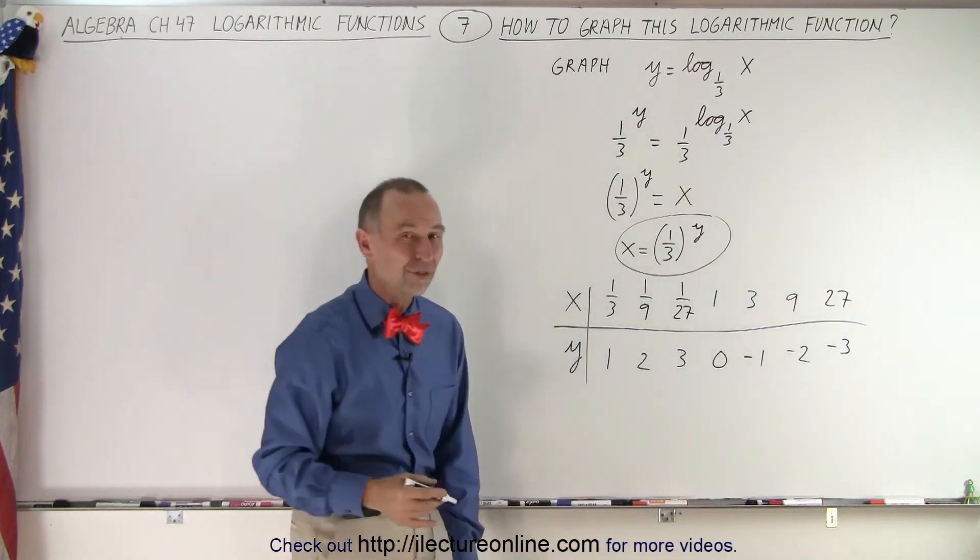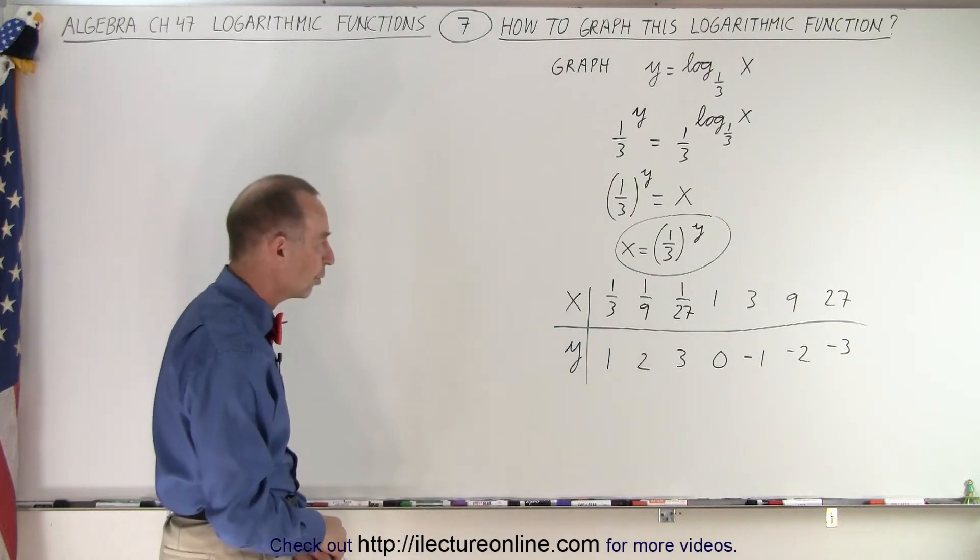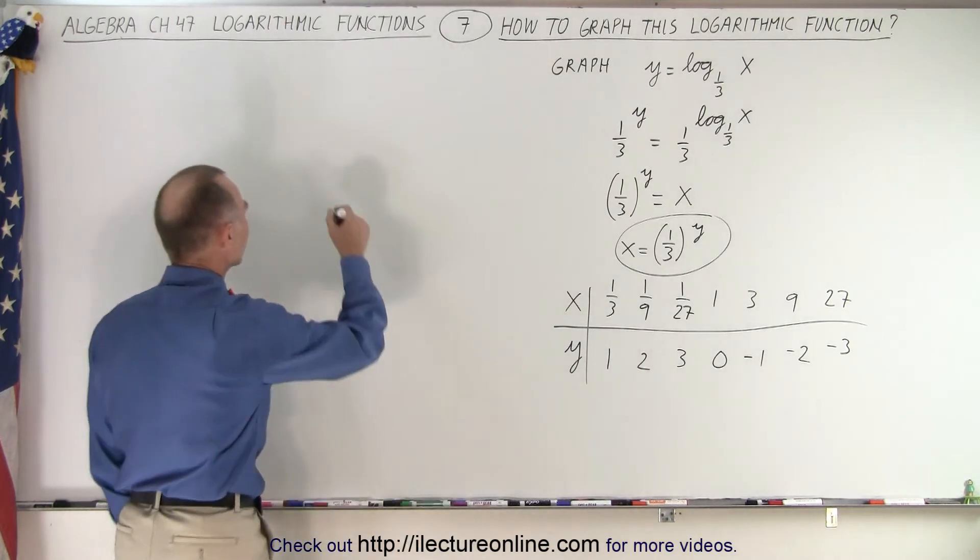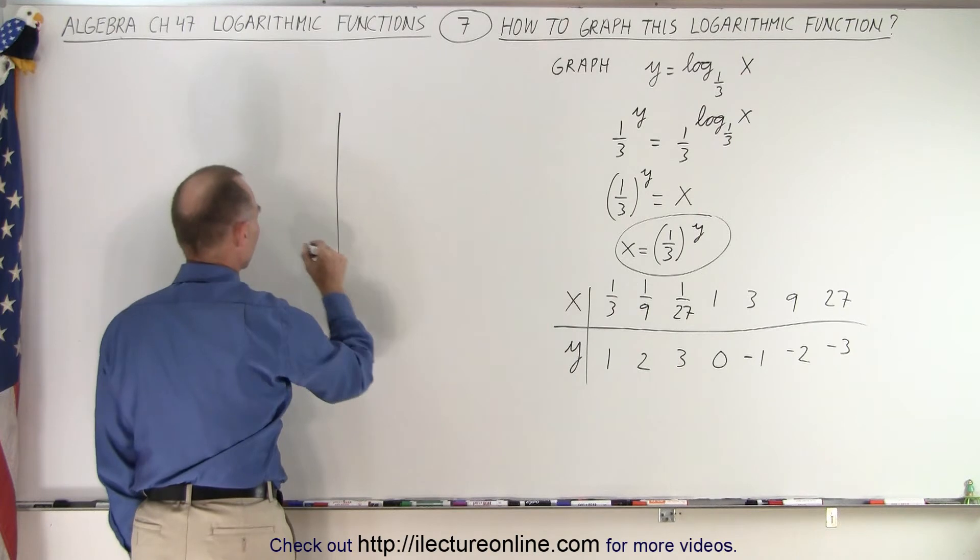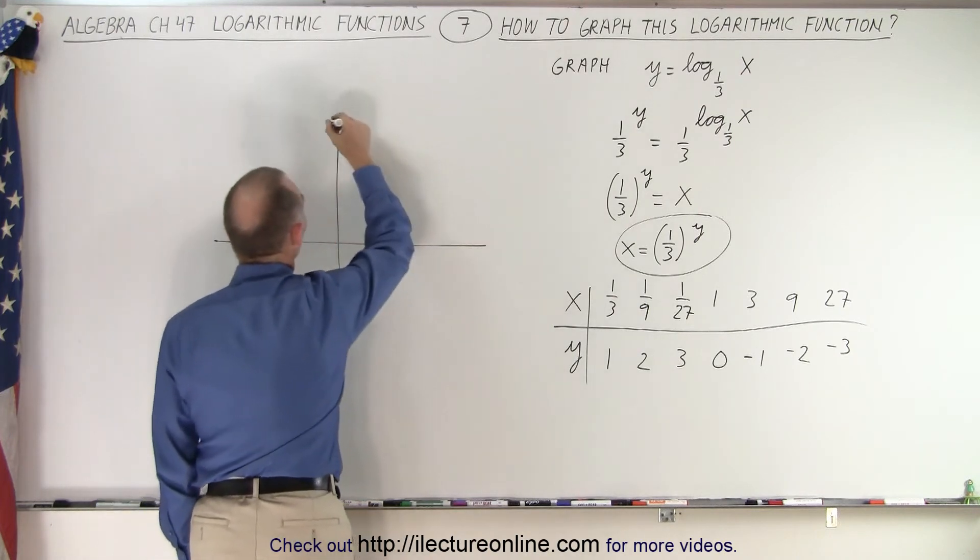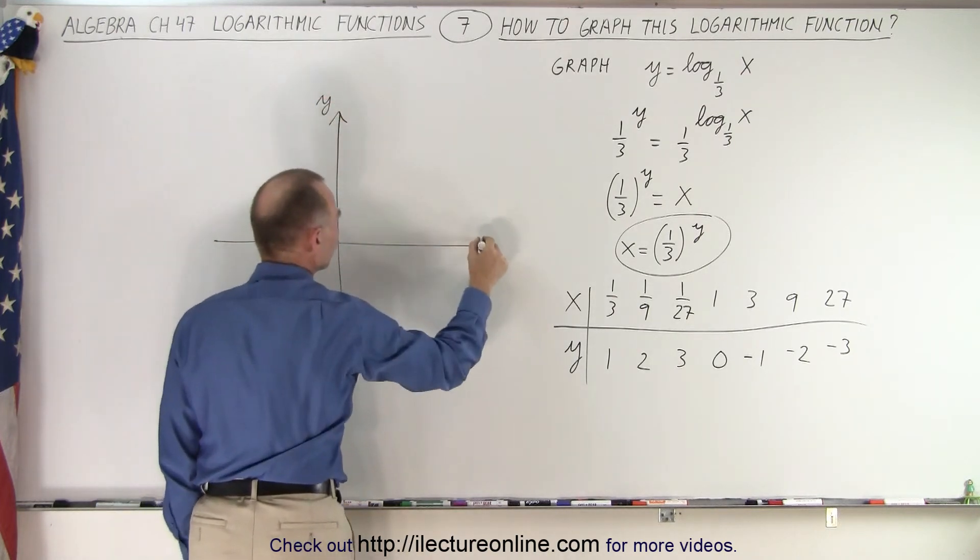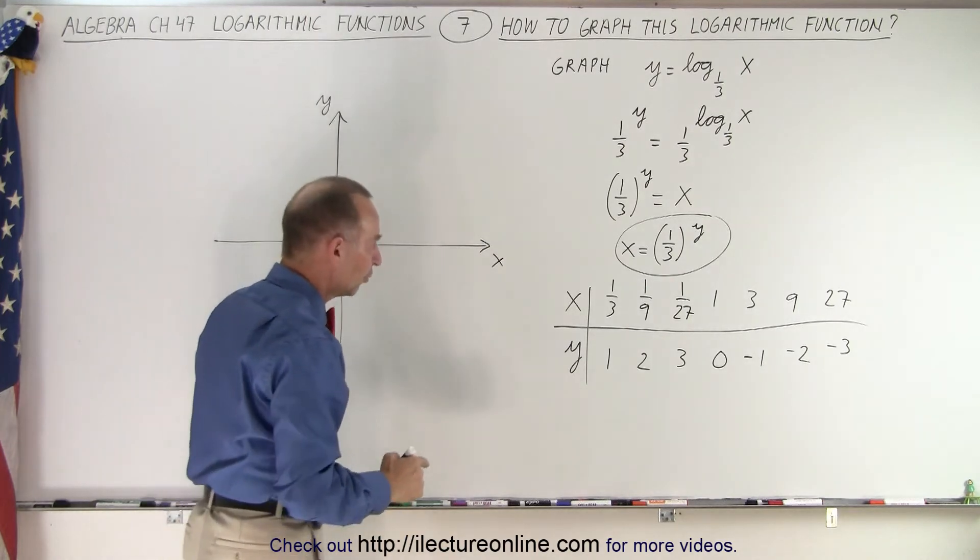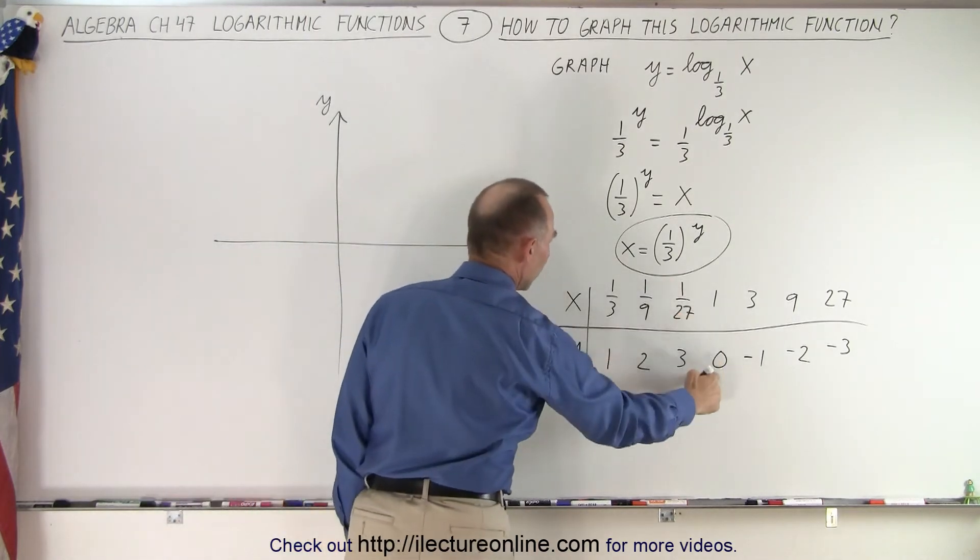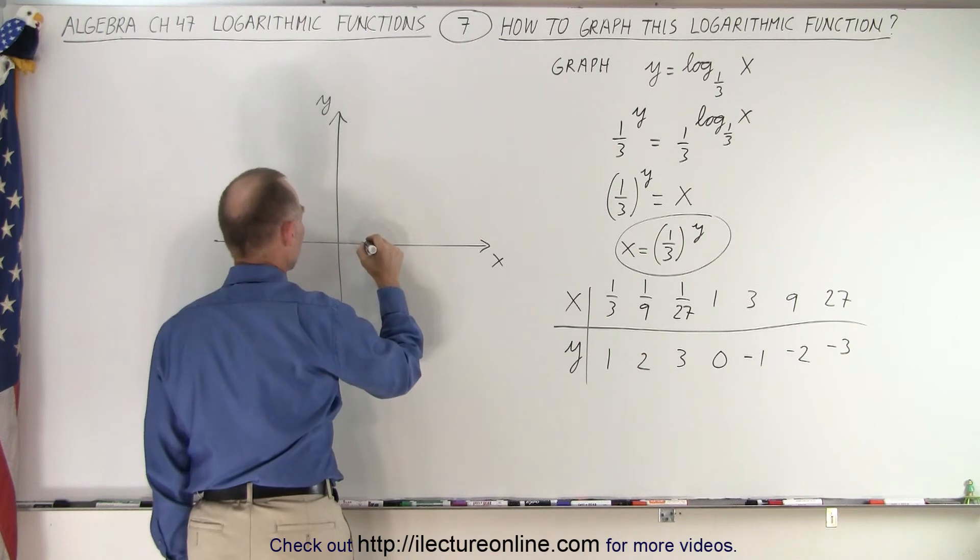So here you have a nice set of points, x and y values for some coordinates. Now we're able to graph it. So let's put in a y and x axis and plot some of these points. So when x equals 1, y is 0. Let's put that there.